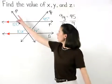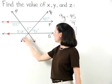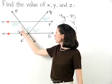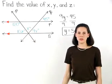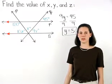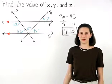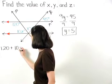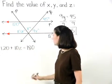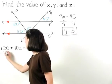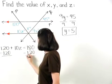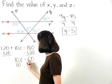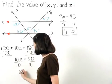Next, using the transversal p and the parallel lines r and s, we can see that the angles marked as 120 and 10z are same-side interior angles. And since we know that if two parallel lines are cut by a transversal, then same-side interior angles are supplementary, we can set up the equation 120 plus 10z equals 180. Subtracting 120 from both sides gives us 10z equals 60, and dividing both sides by 10, we find that z equals 6.